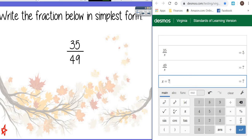7 worked. And when I divided both numerator and denominator by 7, I end up with 5 over 7. And that is the fraction in simplest form.